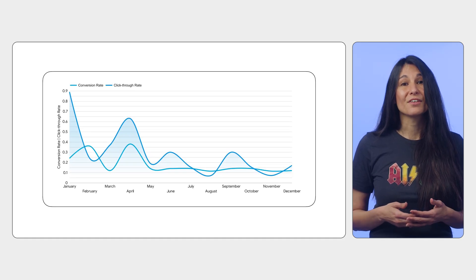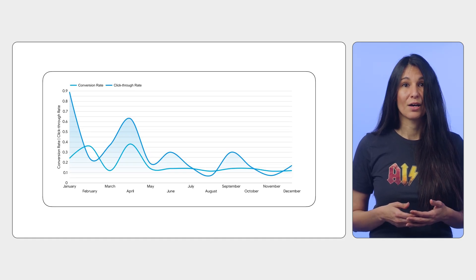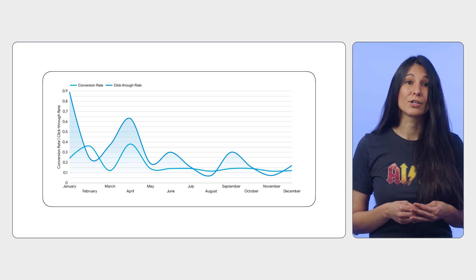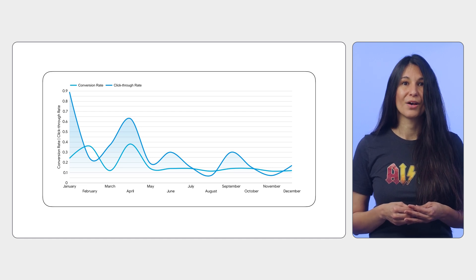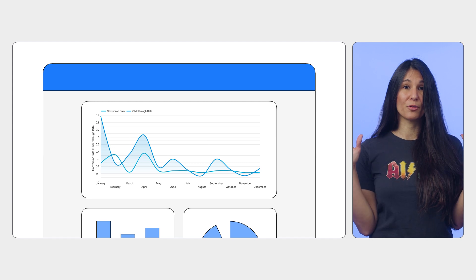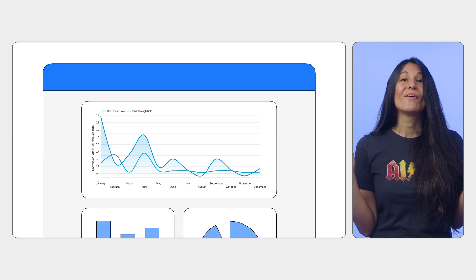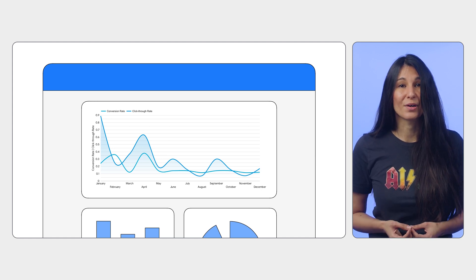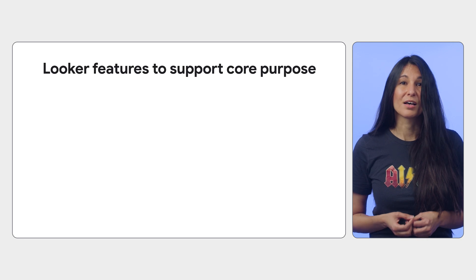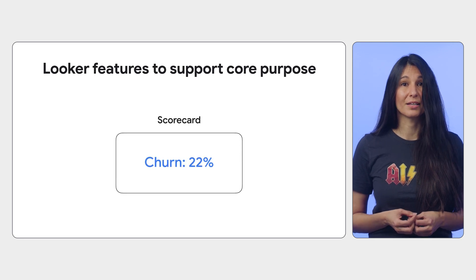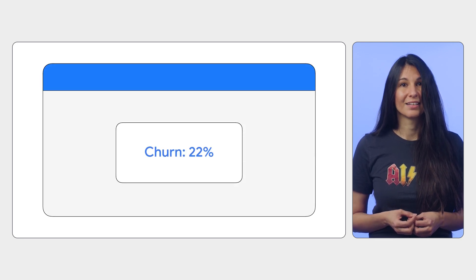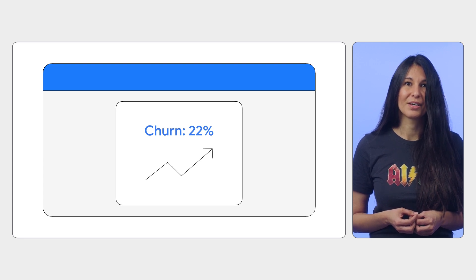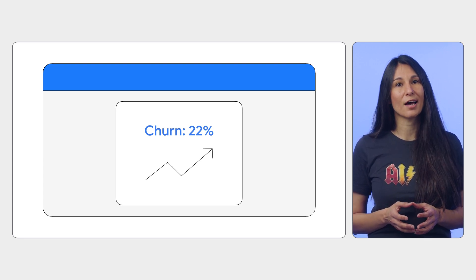Highlight this core purpose in a Looker report with scorecards, titles, descriptions, and images. For example, to assess the effectiveness of an ad campaign, we might highlight conversion and click-through rates over time with a clean time series chart at the top of the page. Or to understand what's driving customer churn, a scorecard with our current churn percentage could be front and center, and we can add a sparkline to show how churn has changed over time.